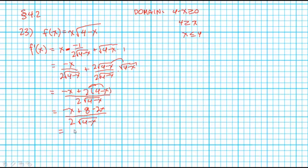...which gives us 8 minus 3x all over 2 root 4 minus x. Now the denominator will only be undefined when we're at the edge of that domain. And then the numerator will be undefined.